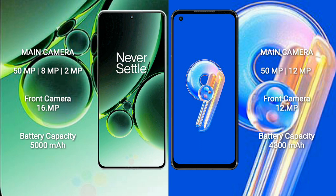OnePlus Nord 3 features a triple rear camera setup: 50MP, 8MP, and 2MP, with a 16MP front camera. Asus Zenfone 9 features a dual rear camera setup: 50MP plus 12MP, with a 12MP front camera.